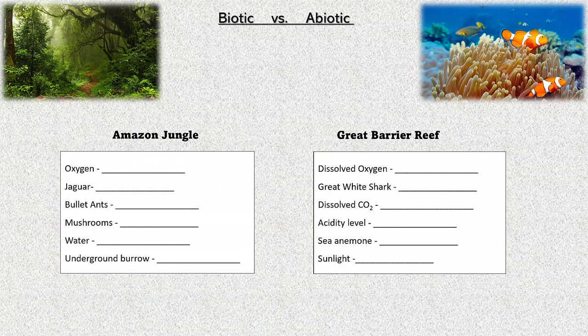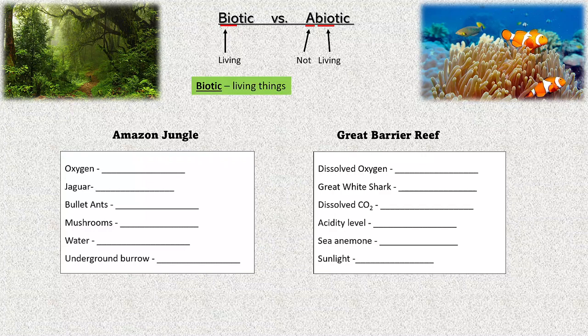Focusing on biotic versus abiotic: 'bio' means living. When you put an 'A' in front of something, it means 'not' or 'without.' So abiotic means not living. Biotic are living things; abiotic, not living. Looking at the Amazon jungle: oxygen is not living — it's abiotic. Jaguars, bullet ants, mushrooms — all biotic. Water and underground burrows — abiotic, not living.